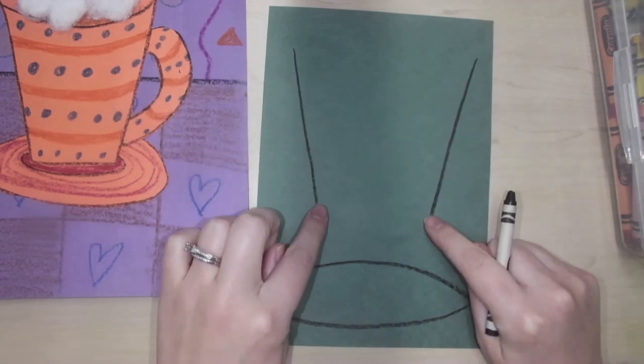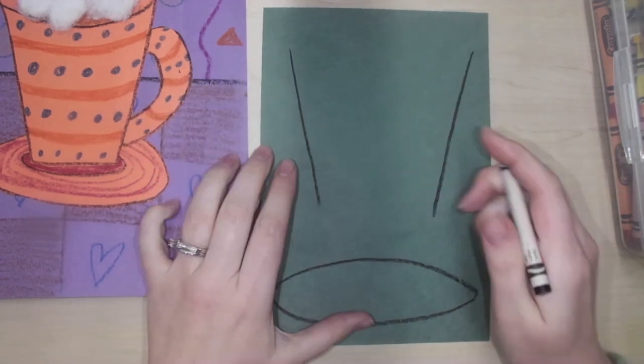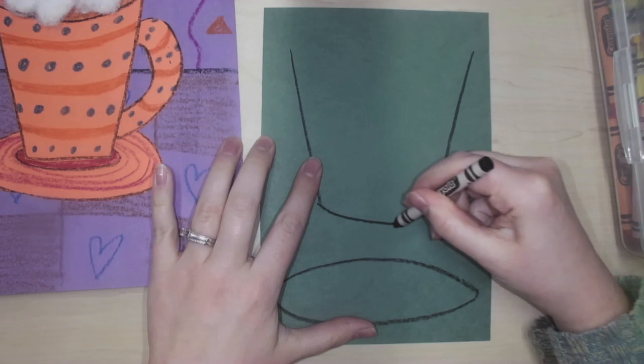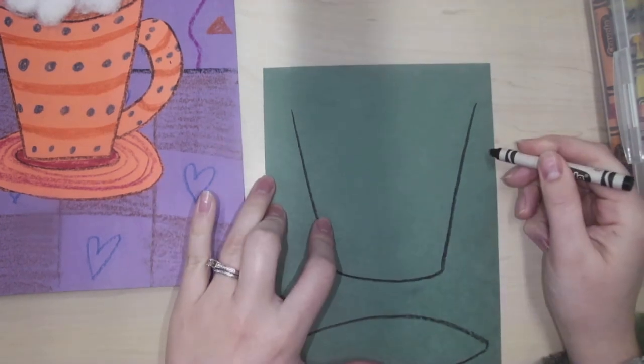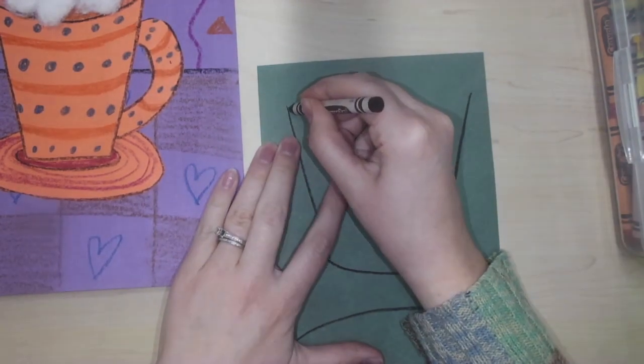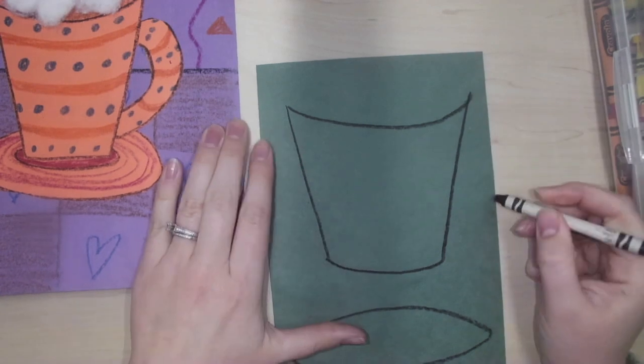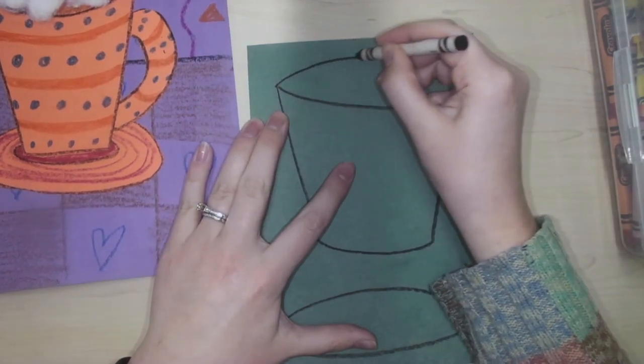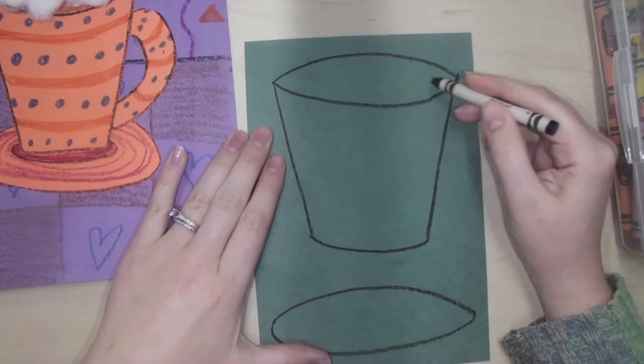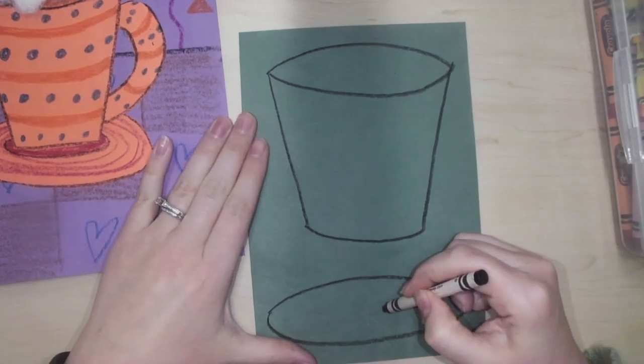Two big lines that are diagonal. Now I'm going to connect them with a curve at the bottom and a curve at the top. And I need one more frowny line curve. Now I have my cup and my saucer.